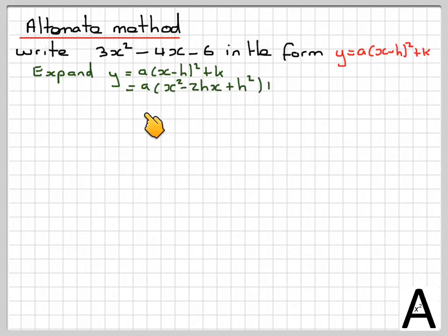If we expand this, expand the bit in the middle, we get ax squared minus 2hx plus h squared plus k. Take the a in, we get ax squared minus 2ahx plus ah squared plus k.